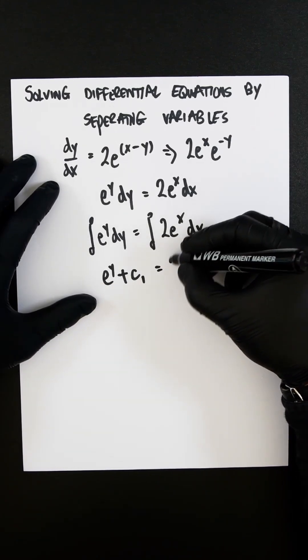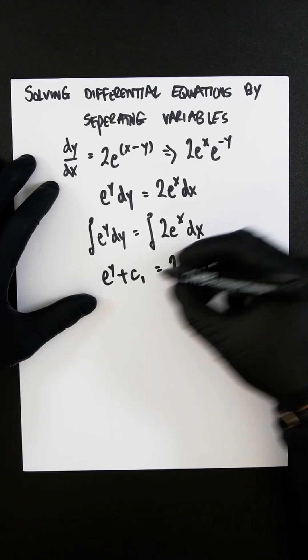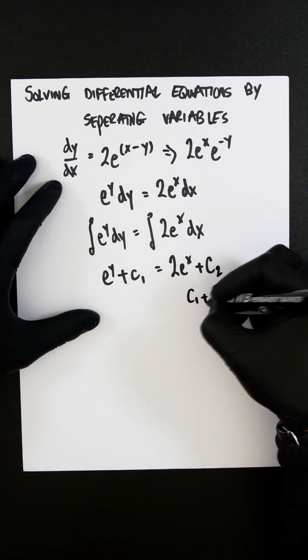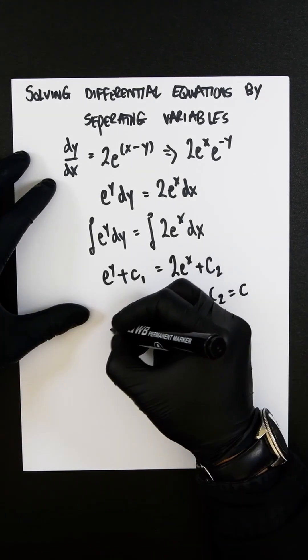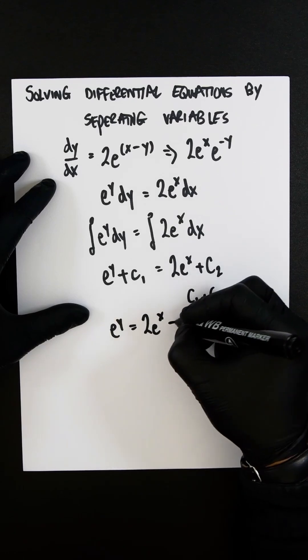And then this integrated is 2e^x plus c2. We can combine the constants, so that basically c1 plus c2 would just be c. So now we would have e^y equals 2e^x plus c.